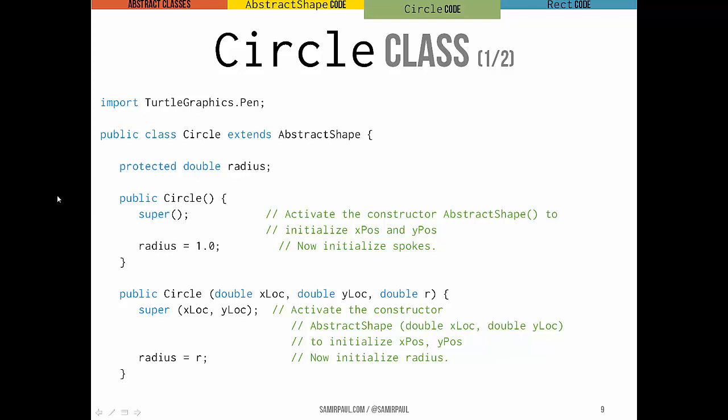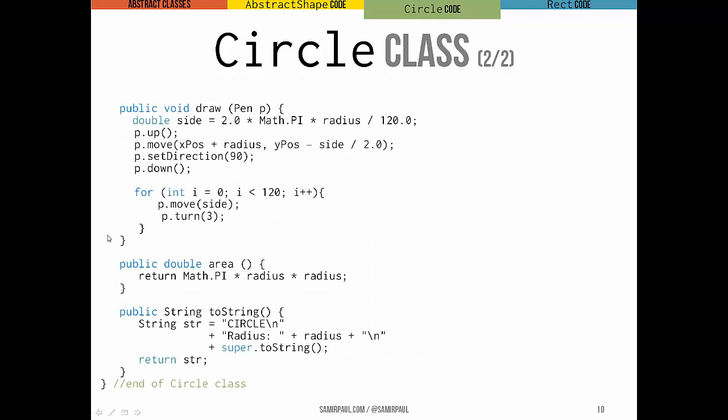We make this protected. Perfect. Make a constructor. This is the no-arg constructor. It calls AbstractShape's constructor to initialize x position and y position, and then we initialize the instance variable unique to Circle right here. Likewise, we have a constructor that takes more parameters, xlocation, ylocation, and radius. You can see here we implement draw, which was in AbstractShape an abstract method, meaning that subclasses had to implement it. So we comply, and here we have draw as defined for a circle, just as it was in previous classes, and we have the fully overridden toString method. You can see here we actually do call, as part of it, super.toString, which calls AbstractShape's toString as a part of the string we're building here.